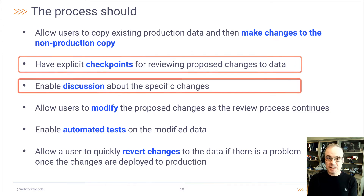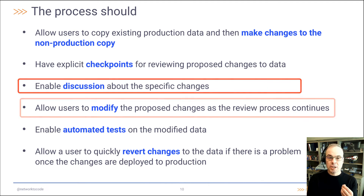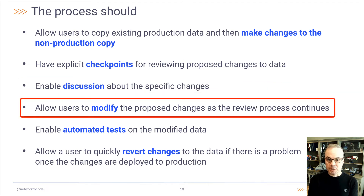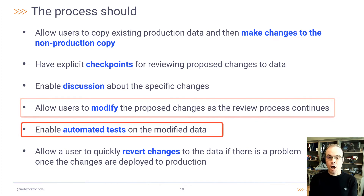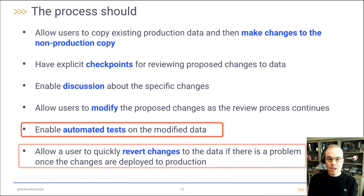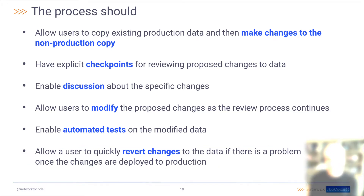It should allow discussion about the specific changes. It should allow users to modify the proposed changes as the review process continues. It should enable automated tests on the modified data. And it should allow a user to quickly revert changes to the data if there is a problem once the data is in production.